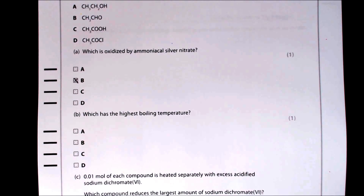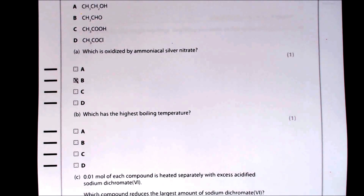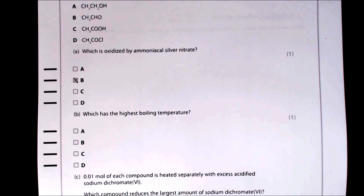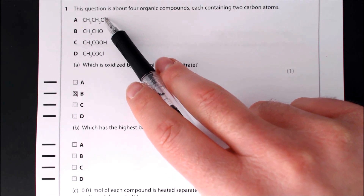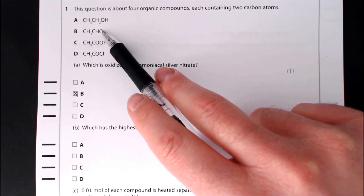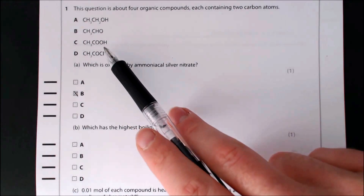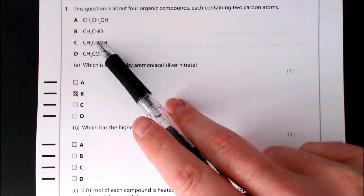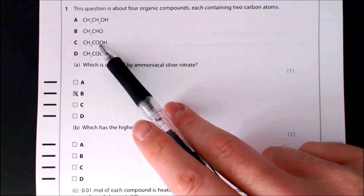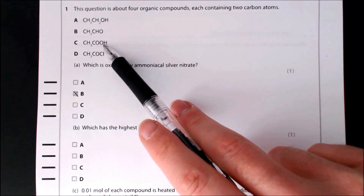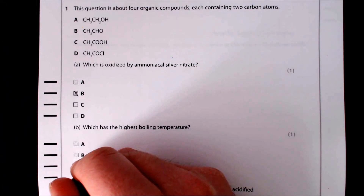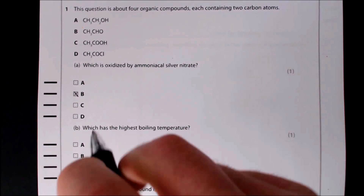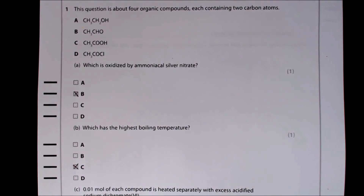The next part asks which compound has the highest boiling temperature. We're looking for the molecule with the most hydrogen bonding, since that governs boiling point. The alcohol has hydrogen bonding via its OH group; the aldehyde does not because it only has a carbonyl. The carboxylic acid has two possible sites of hydrogen bonding — the C=O and the OH — so the answer is C.